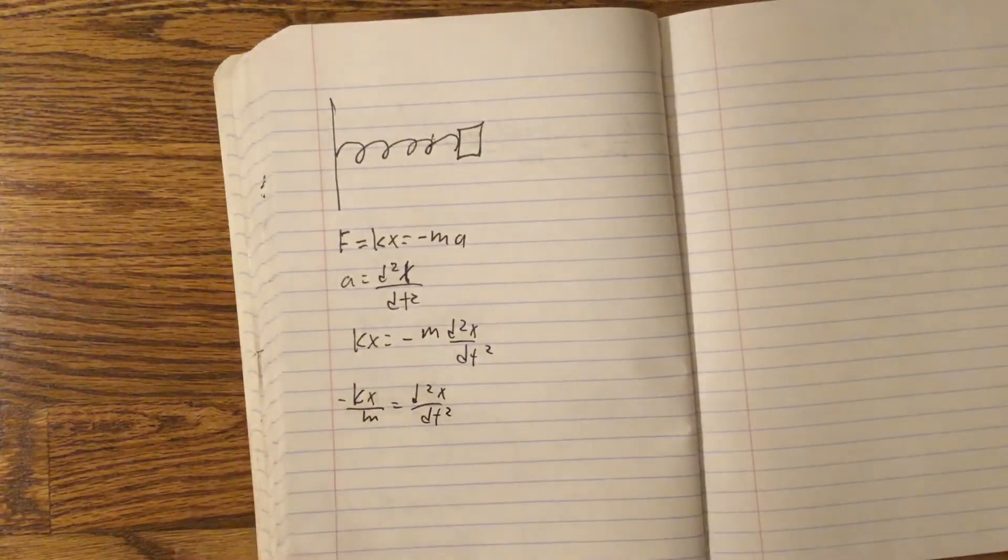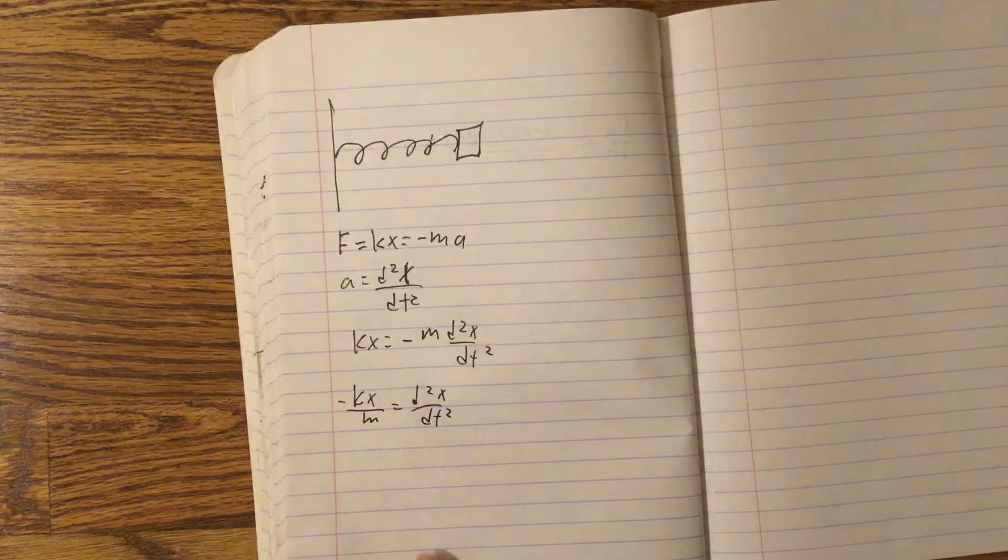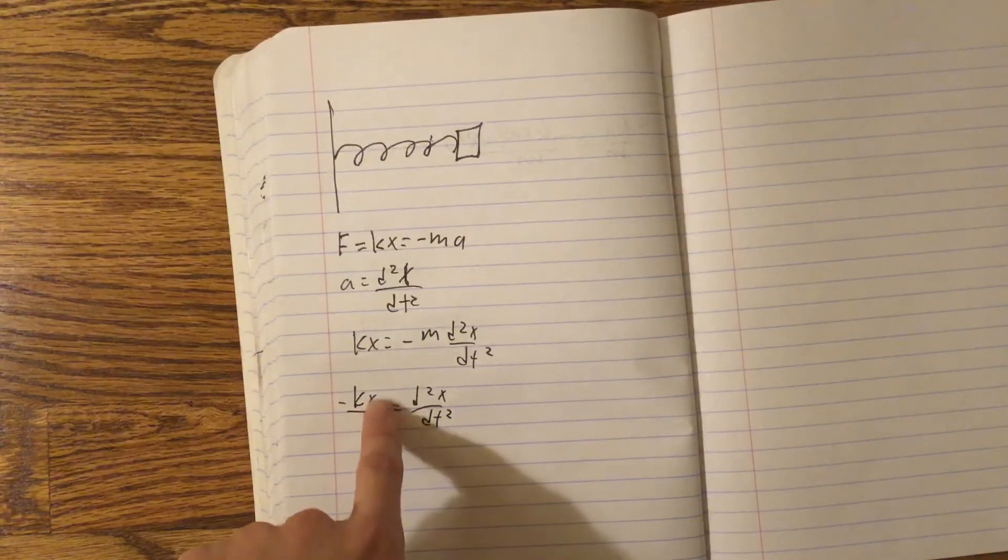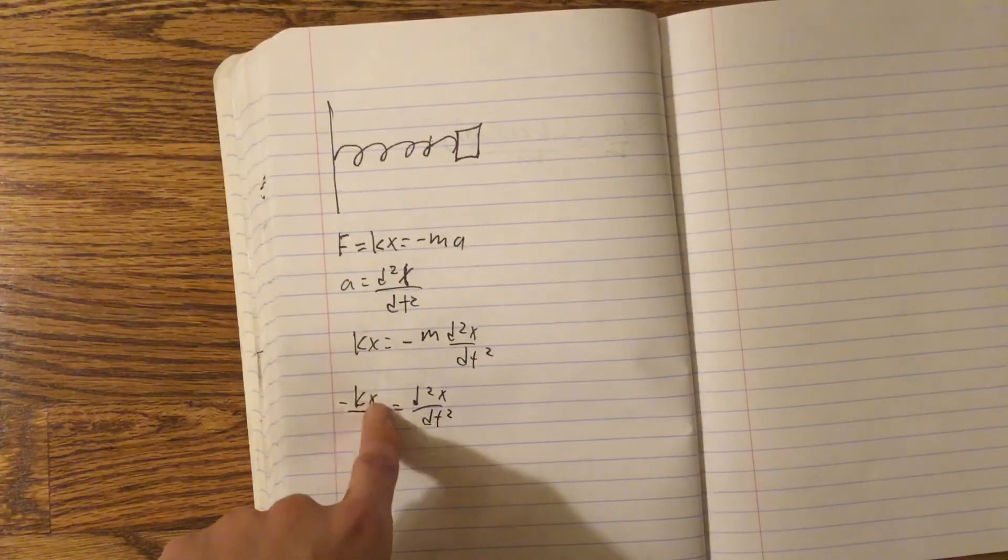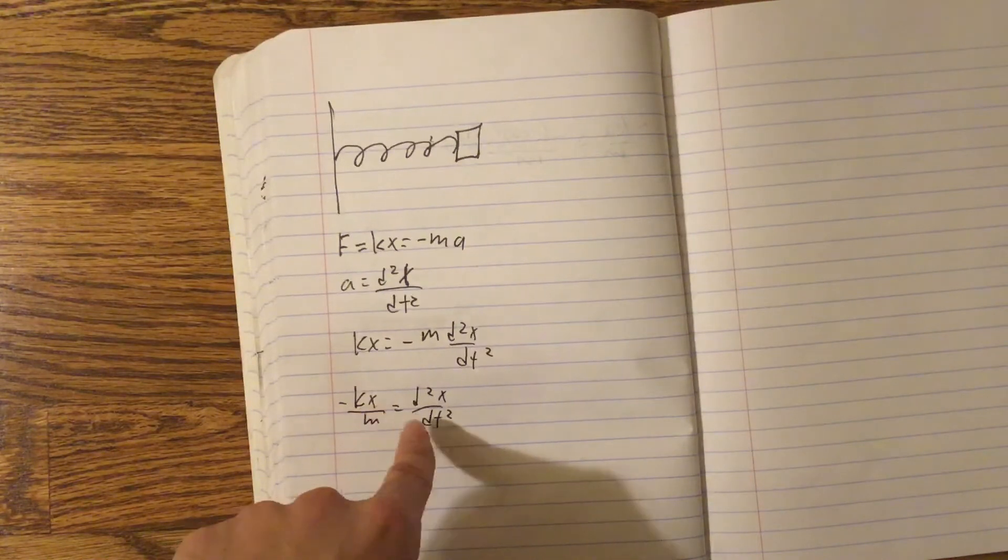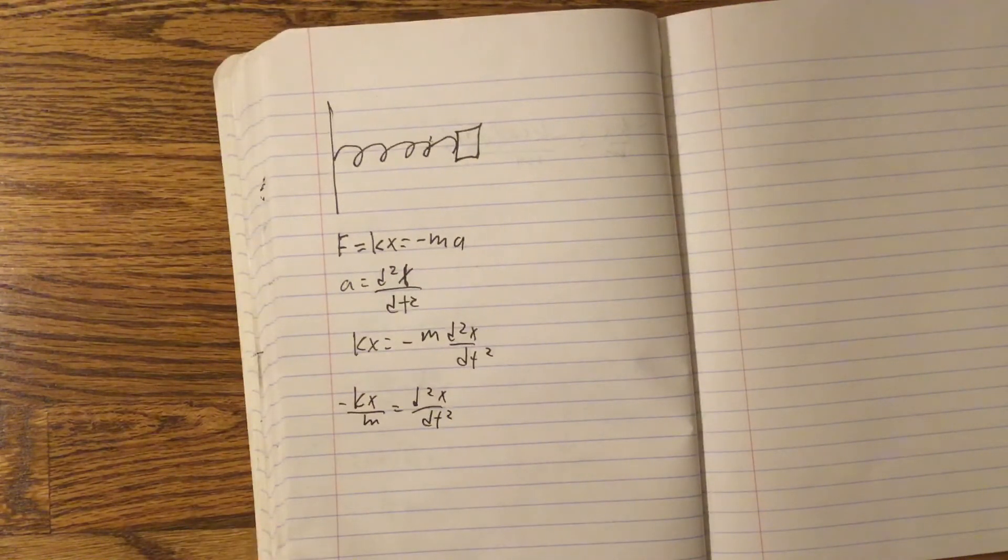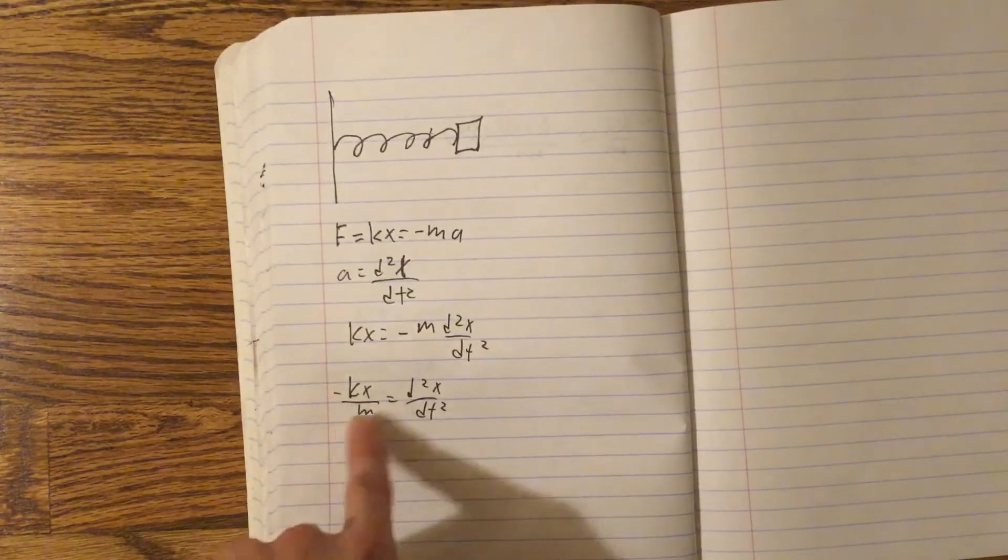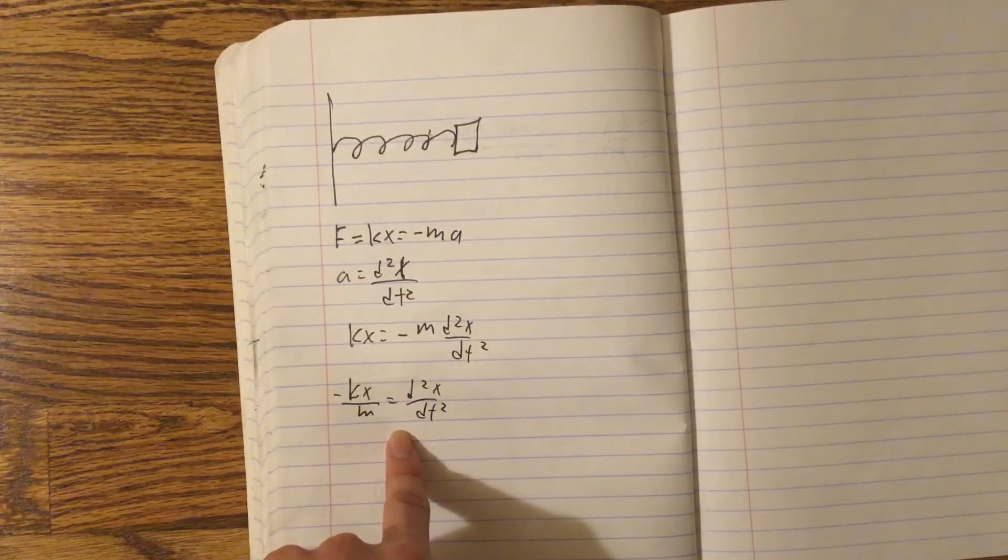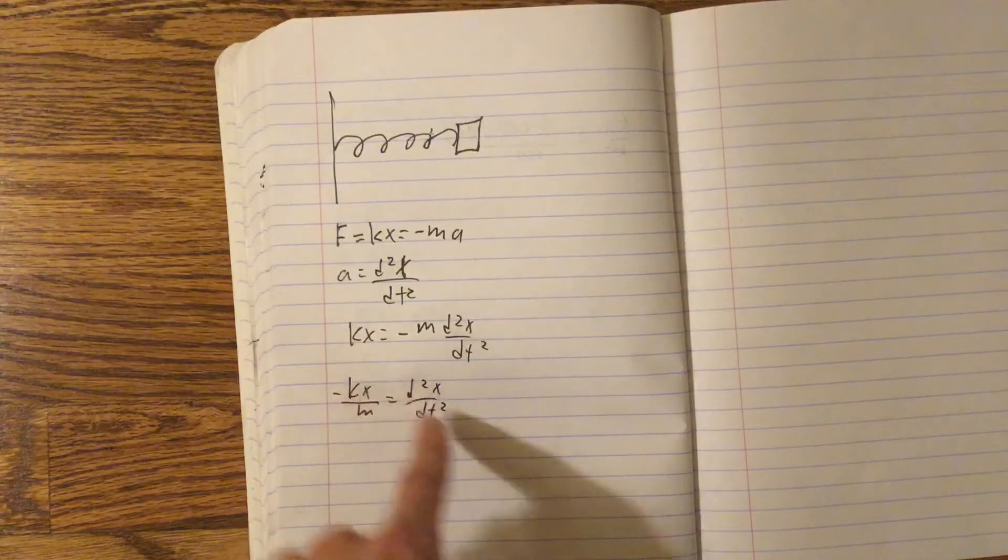Now, I ask you this question. What type of function has its original function equal to its double derivative, but just with a constant attached to it? What type of functions can have this property?